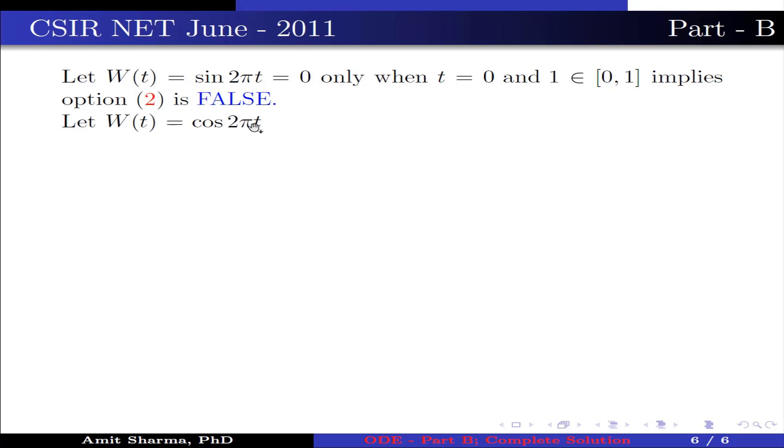Let W(t) is cos(2πt) which is 0 only when t is 1/4 that belongs to closed interval [0,1]. This implies option 3 is false.